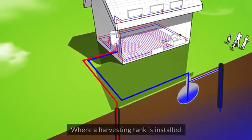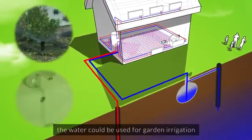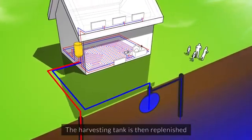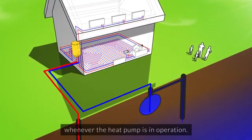Where a harvesting tank is installed, the water can be used for garden irrigation and other grey water uses. The harvesting tank is then replenished whenever the heat pump is in operation.